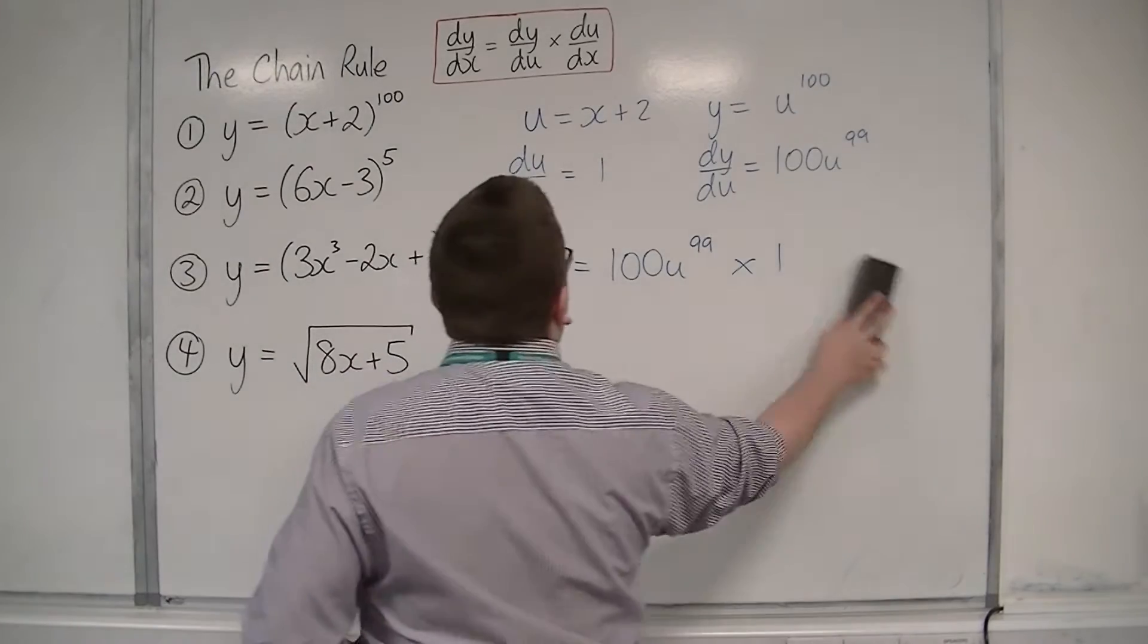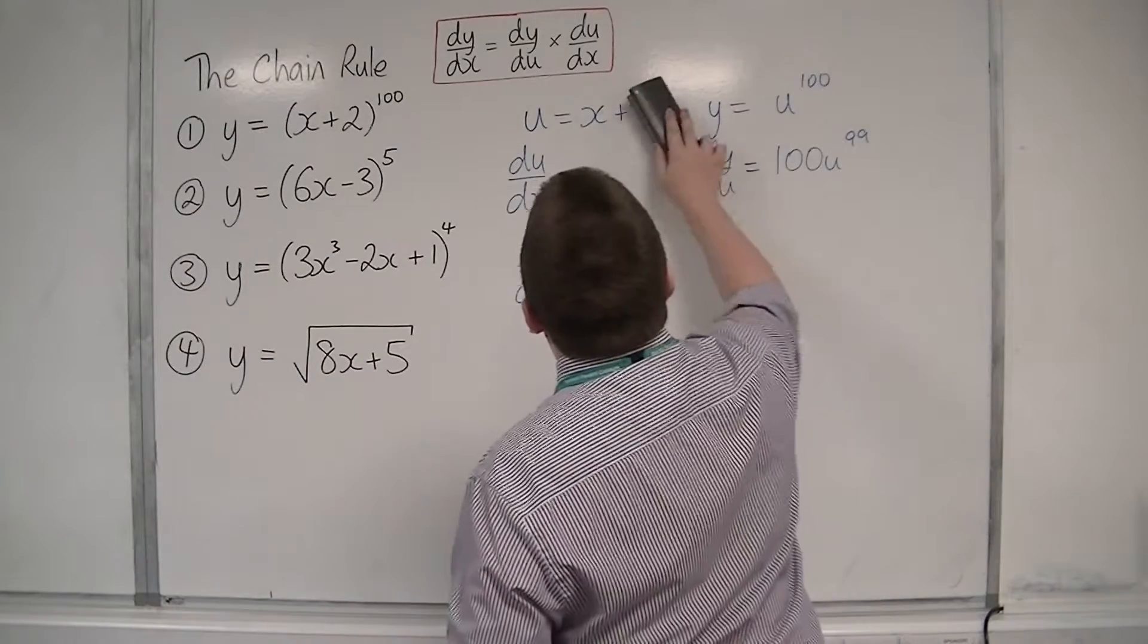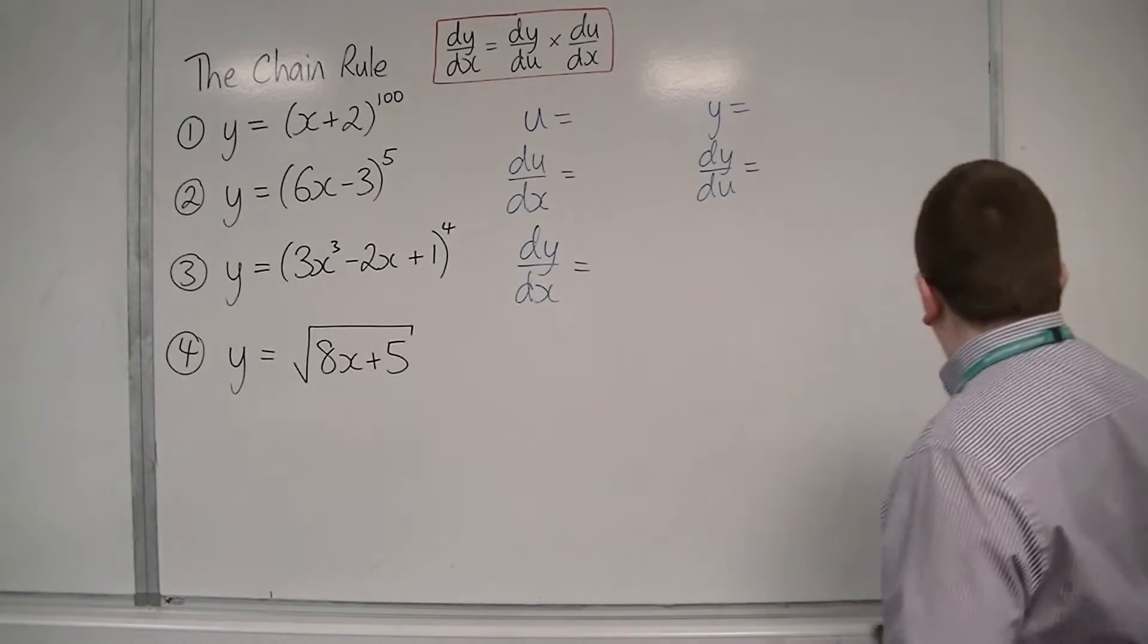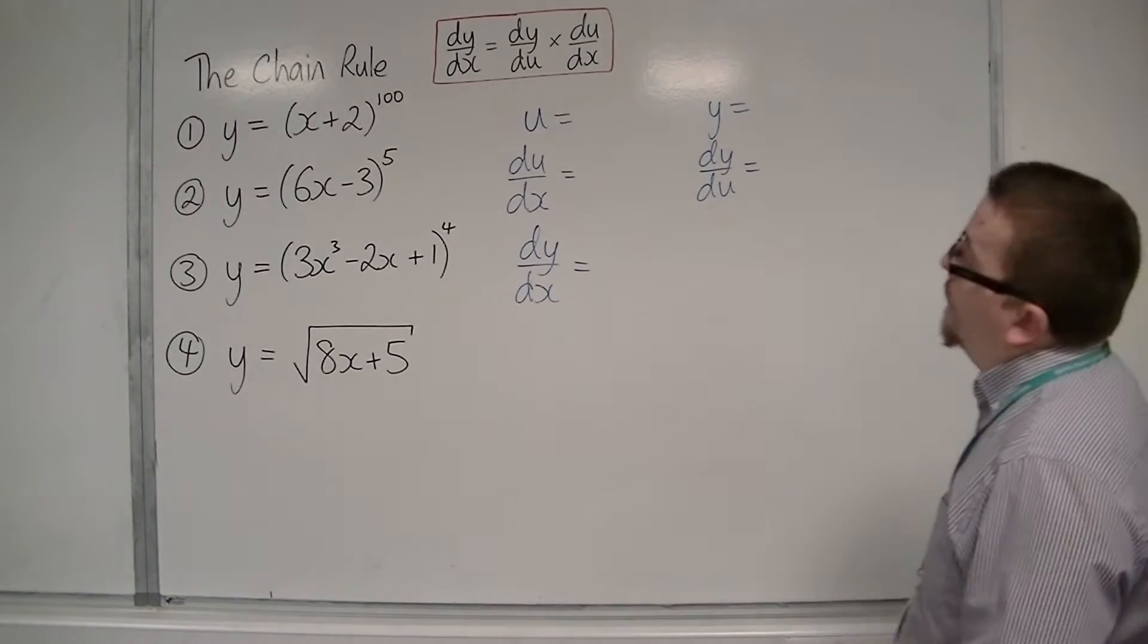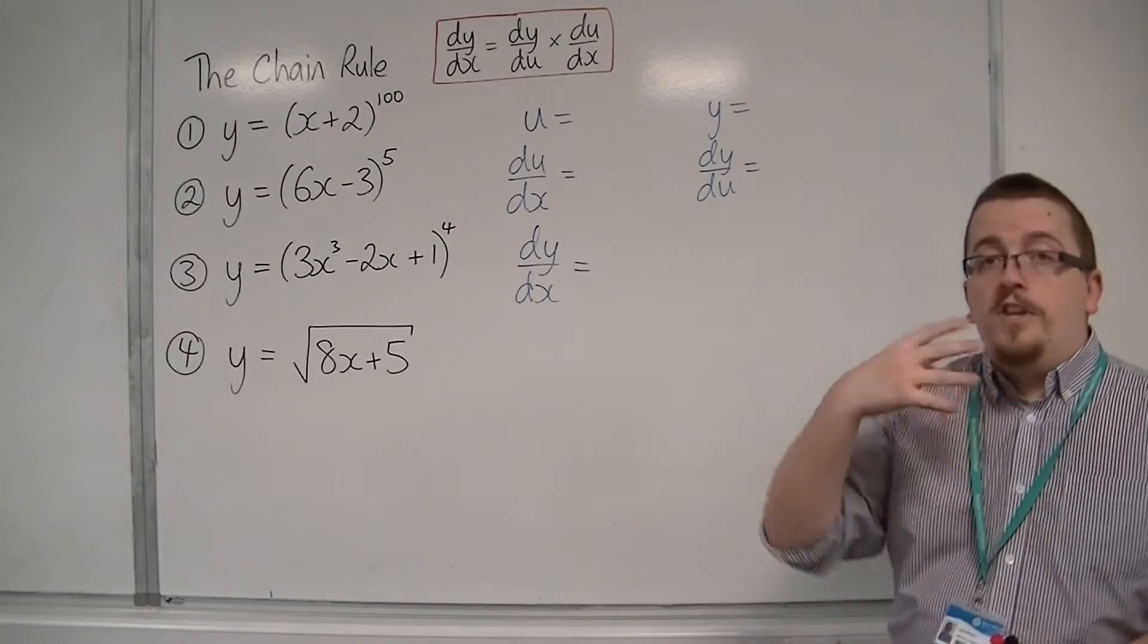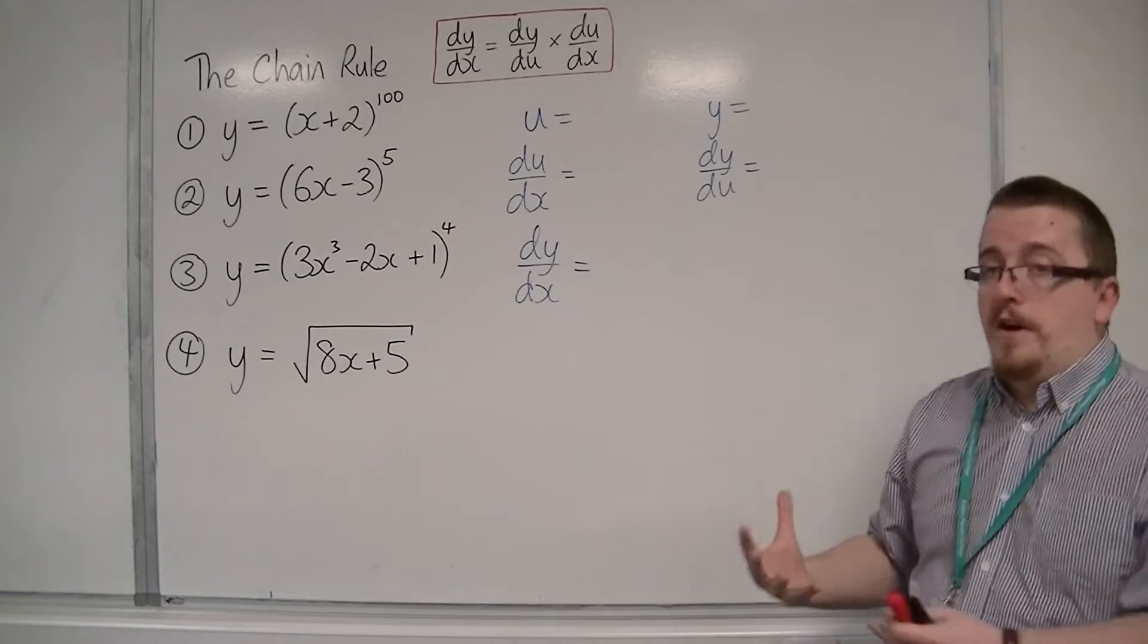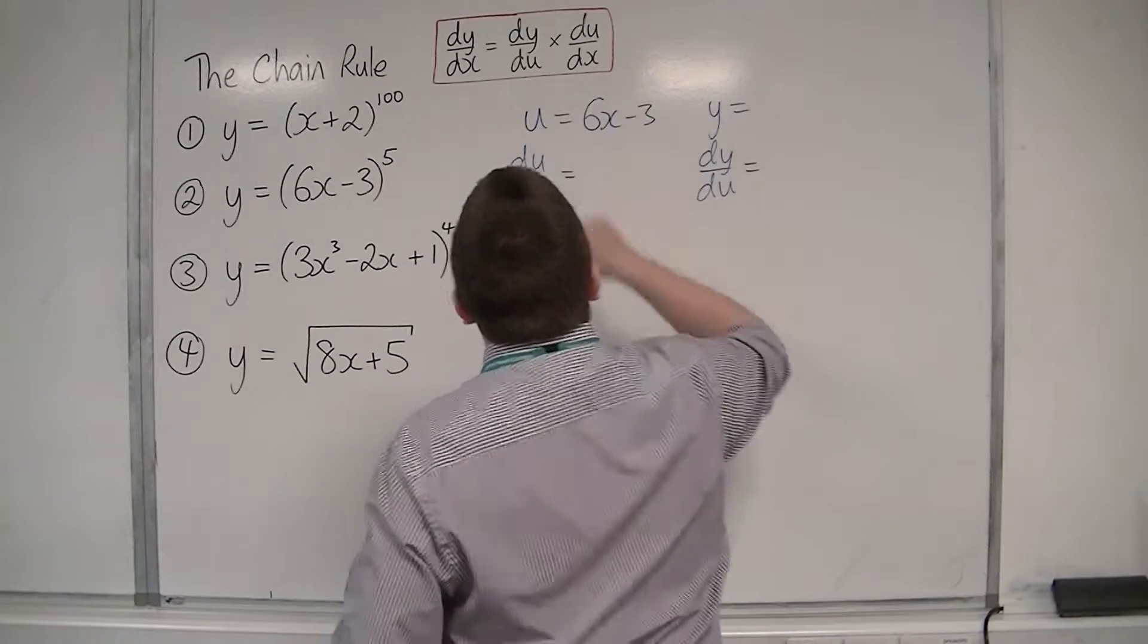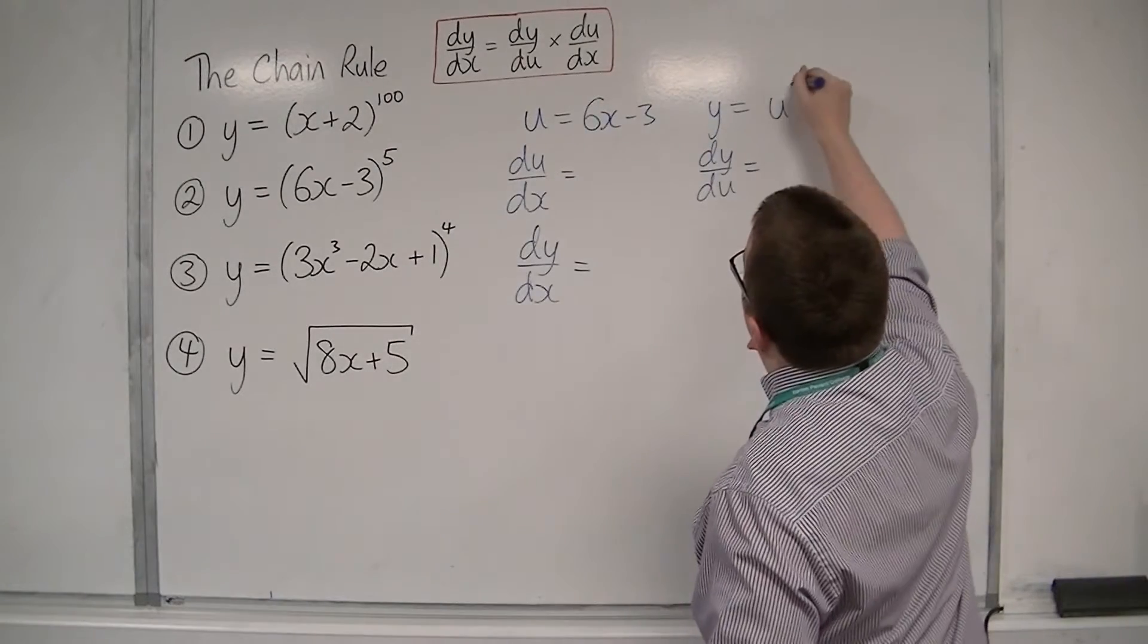Let's have a look at number 2. I'll leave those pieces there. So the second one, first identify what u is going to be, that's the 6x minus 3. So y is u to the power of 5.